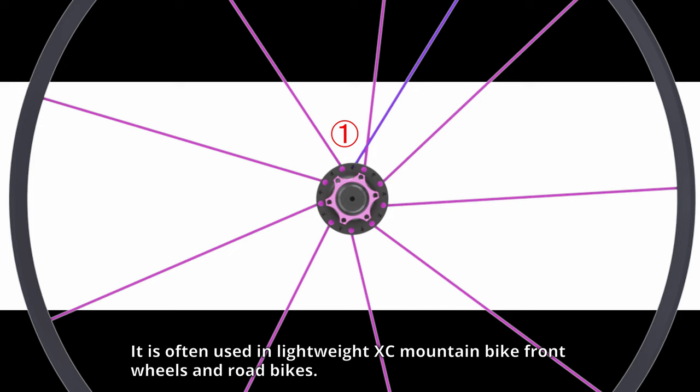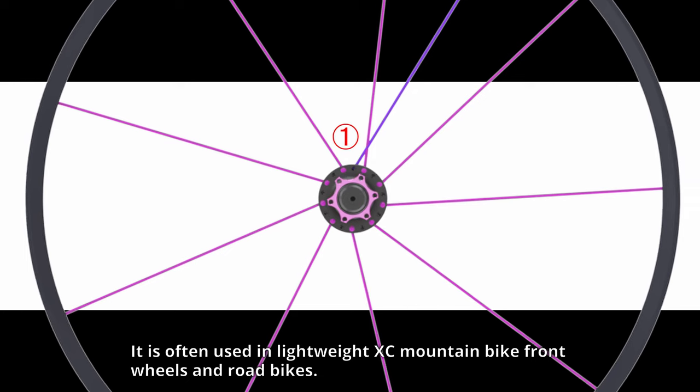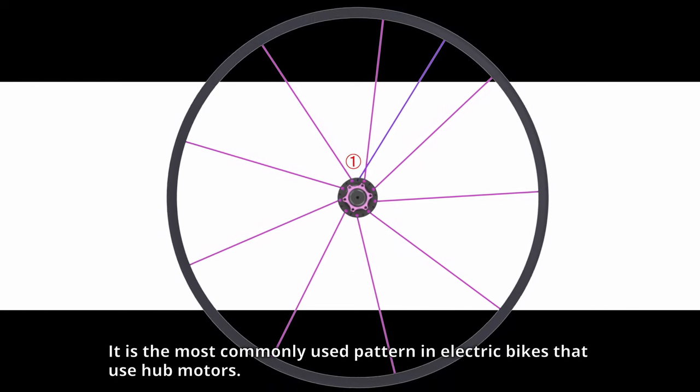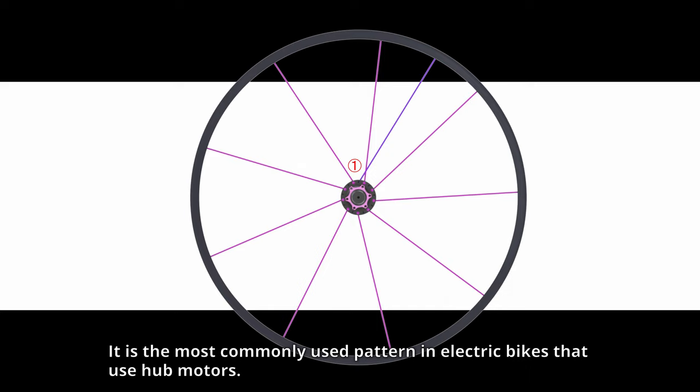It is often used in lightweight XC mountain bike front wheels and road bikes. It is the most commonly used pattern in electric bikes that use hub motors.